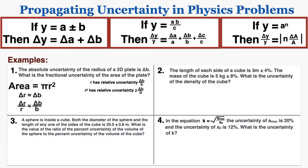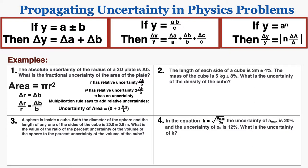Since the radius has a fractional uncertainty of delta b over b, raising r to the power of 2 means the fractional uncertainty of r squared is 2 times delta b over b — because the rule for powers is to multiply the fractional uncertainty by the power. Pi has no uncertainty because it's an exact number, and multiplying by pi adds 0 to the fractional uncertainty. So the fractional uncertainty of the area is equal to 2 times delta b over b.